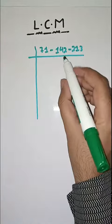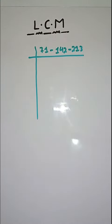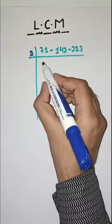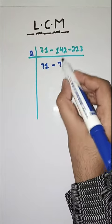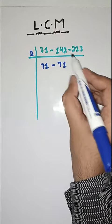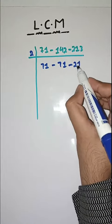As there is an even number, we first start with 2. 71 as it is because it doesn't come in table of 2. 2 7s are 14, 2 1s are 2. Got it? And 213 also as it is.